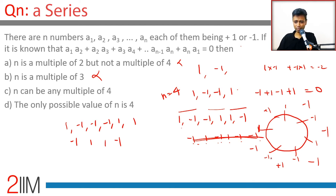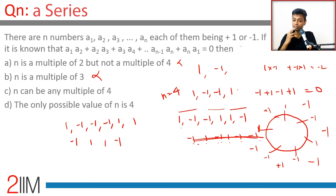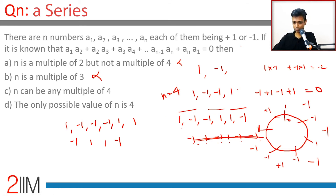We need the -1s and 1s arranged around the circle such that a -1 and a 1 are adjacent exactly half the time — exactly 3 times out of 6. But in the examples tried, they are adjacent either 4 times or 2 times, never exactly 3. This keeps running into trouble.